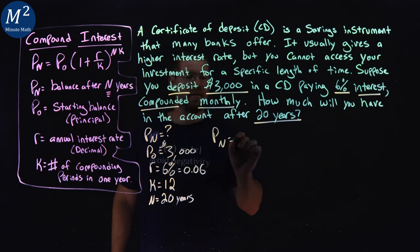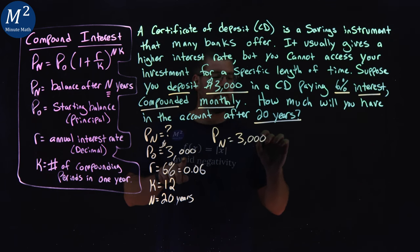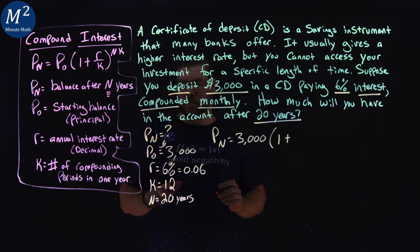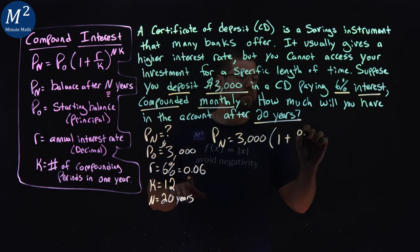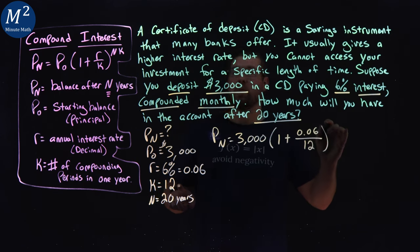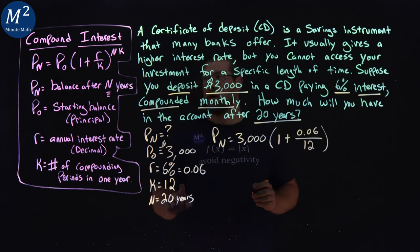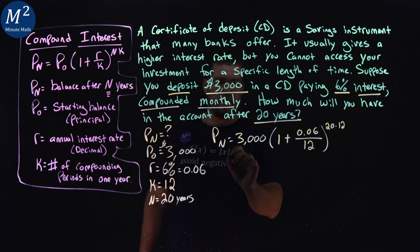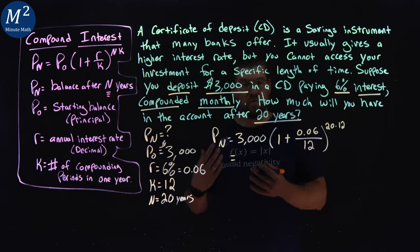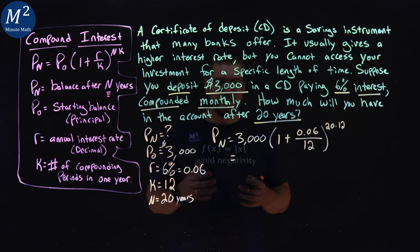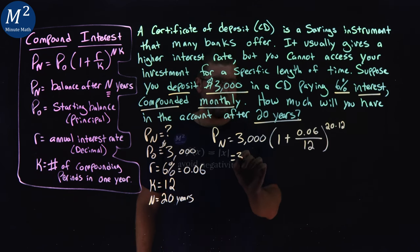Let's do the formula here. P sub n equals our initial amount, 3,000, times 1 plus our r value, which is 0.06, over our k, which is 12, to our exponent power of 12, or 20 times 12. Now, I don't recommend just typing this all in your calculator right away. You can. You probably will get it down pretty decent, but I like to kind of break down each part where I can.